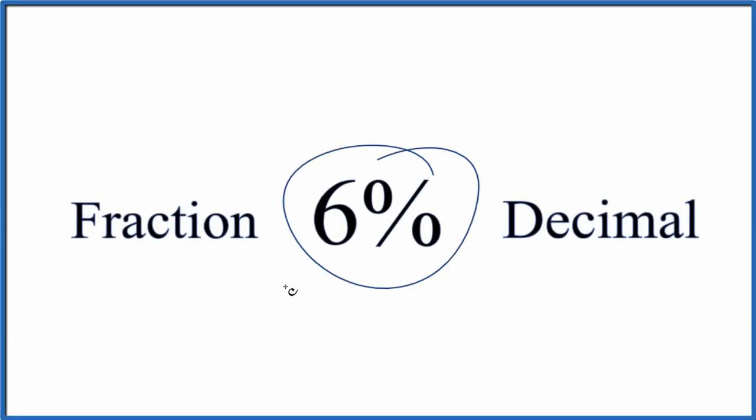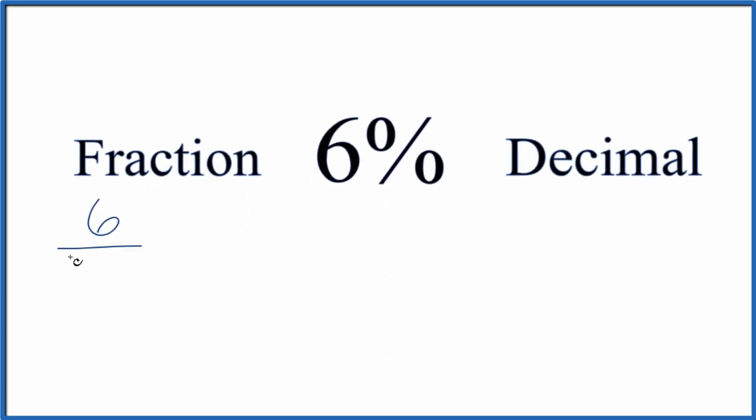Let's convert 6% to a fraction and to a decimal. So let's start with the fraction here. The percent sign means per 100, so we have 6 per 100. And there's your fraction. 6% as a fraction is 6 over 100.